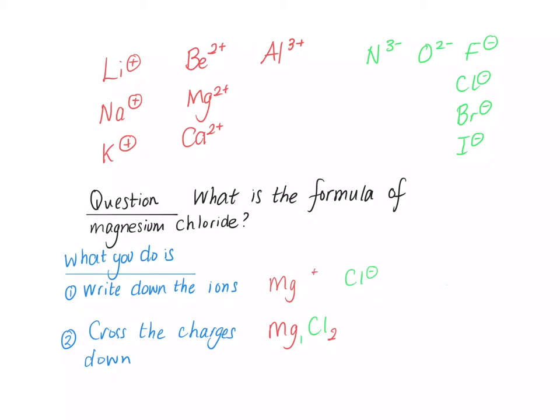However, because in chemistry we don't write the ones, we tidy the formula up and we get it as MgCl2. So the formula of magnesium chloride is MgCl2.